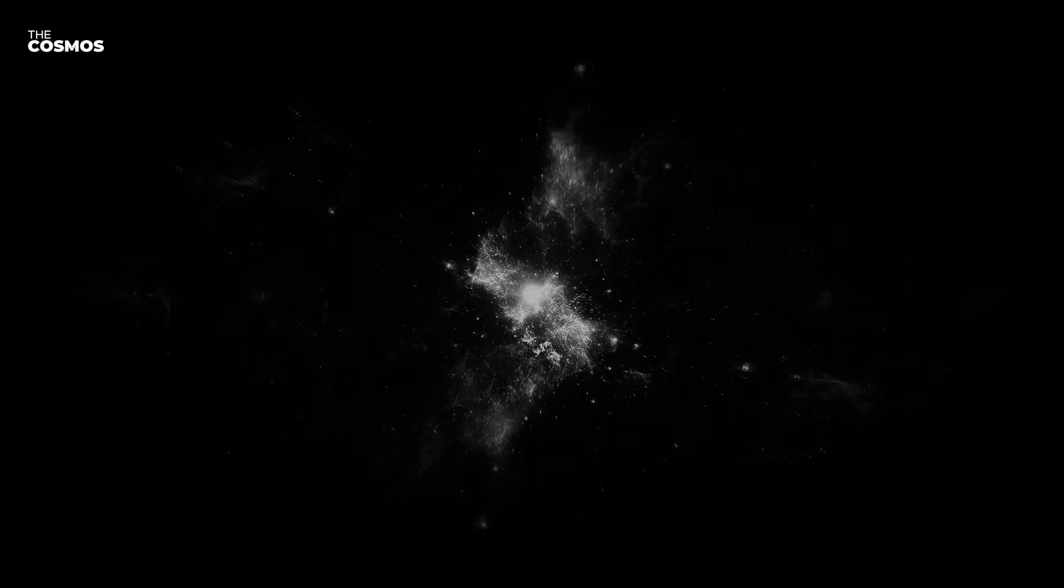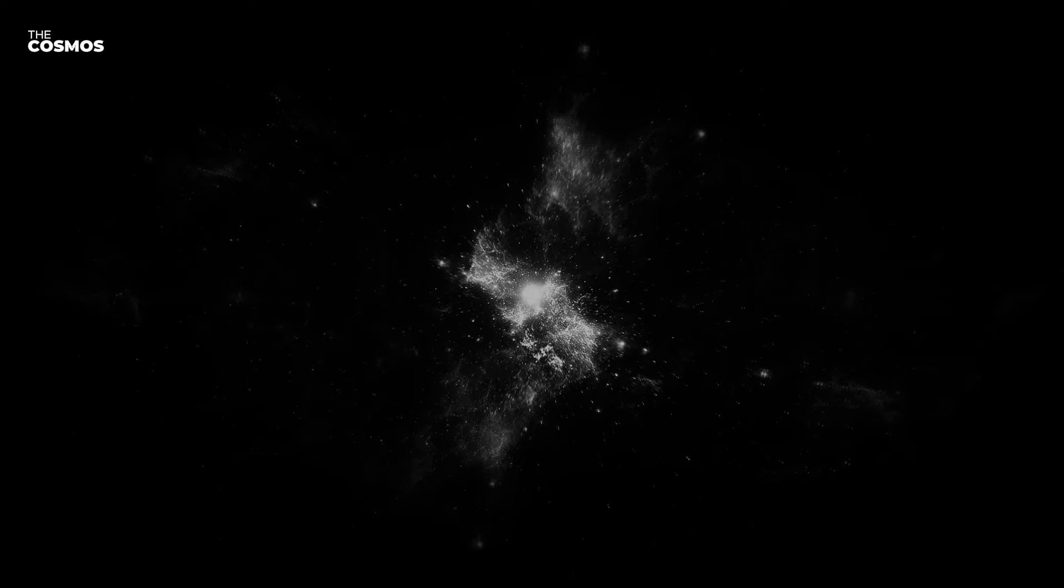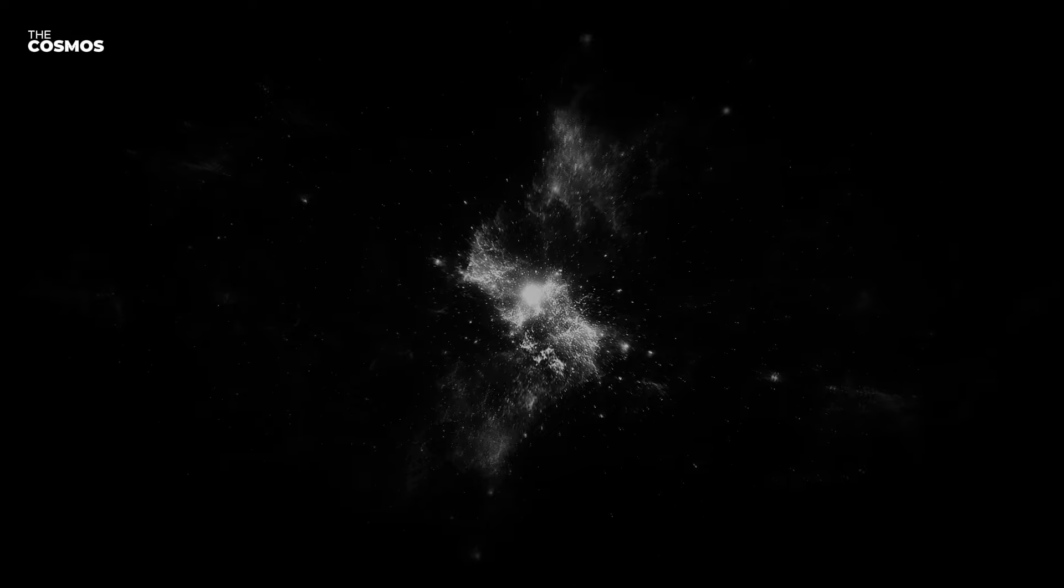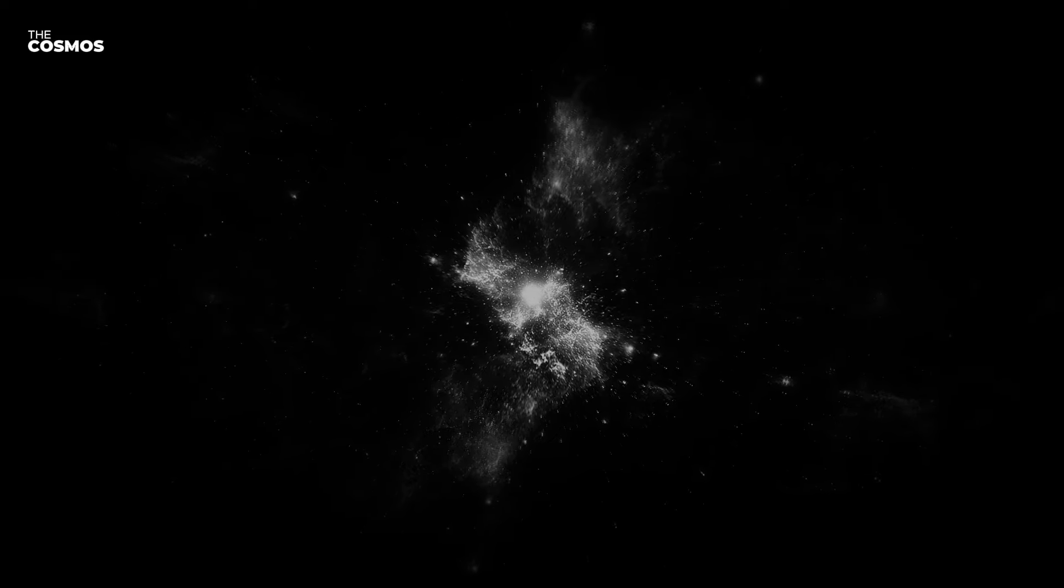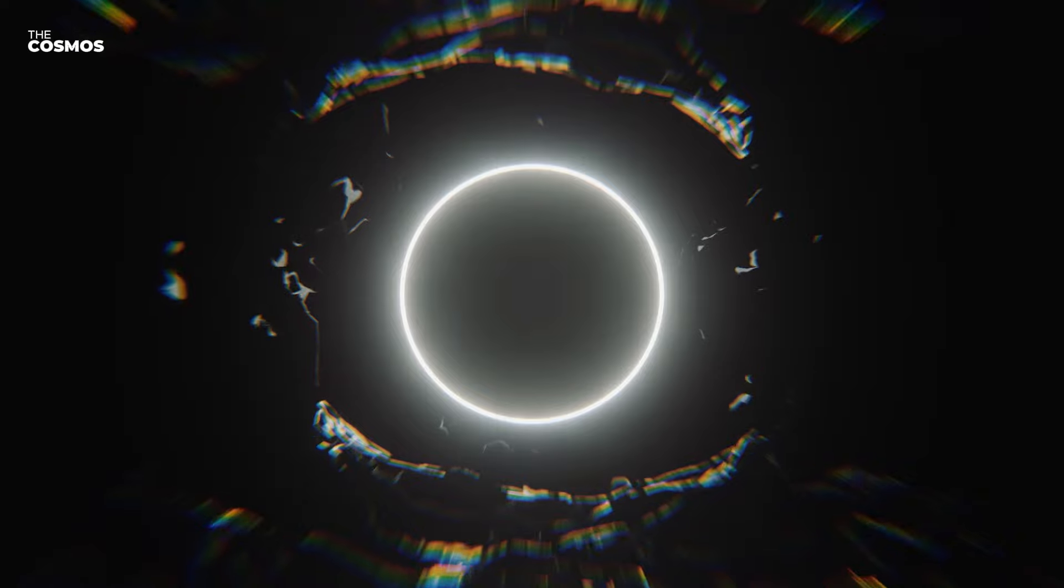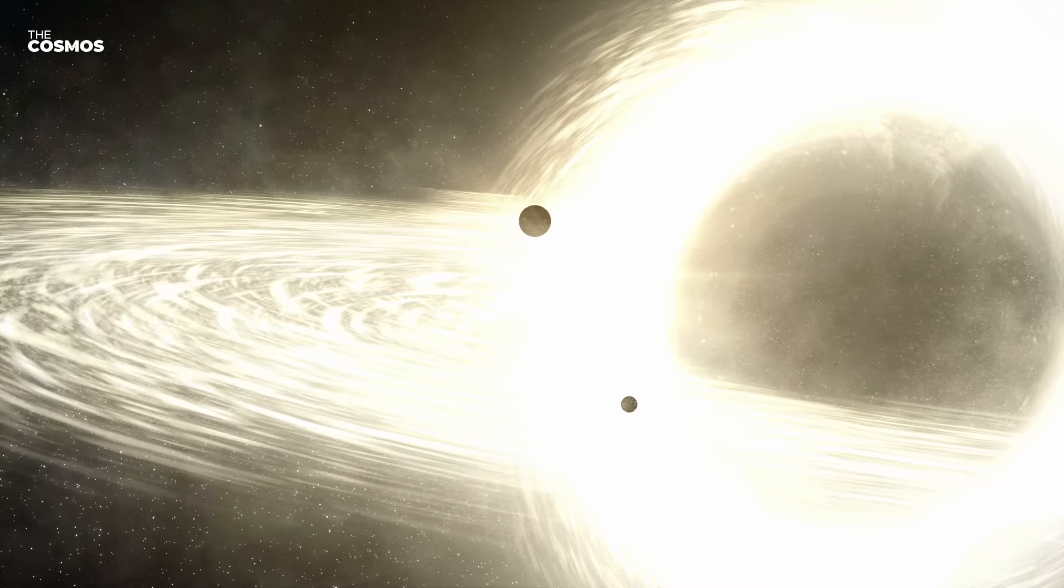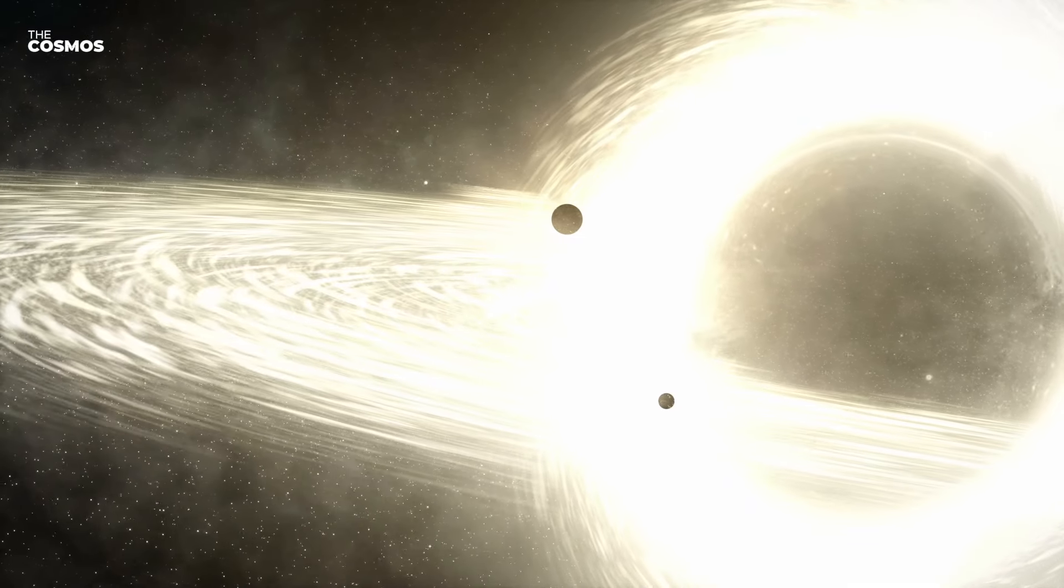As the eons pass, even the stars within these clusters face their demise. The process of star formation slows and eventually stops as the gas needed to create new stars becomes too sparse. Existing stars burn out, one by one, leaving behind white dwarfs, neutron stars, and eventually black holes. These stellar remnants will also cool and fade over time.